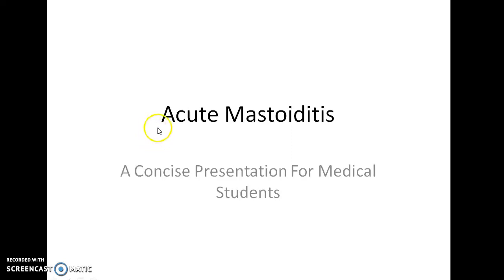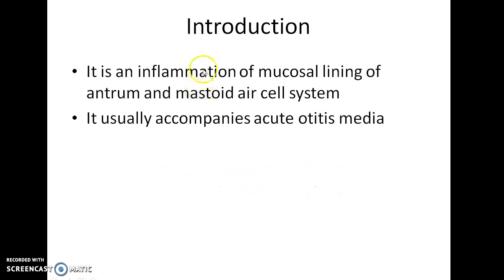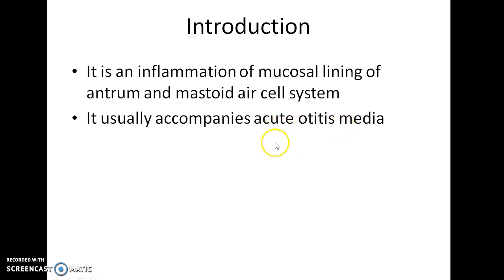Hello, this is Indian Medico. In this video we are going to see about acute mastoiditis — a concise presentation for medical students. Acute mastoiditis is an inflammation of the mucosal lining of the antrum and mastoid air cell system. It usually accompanies acute otitis media; that is, acute mastoiditis is a complication of acute otitis media.